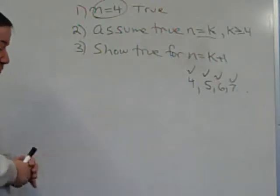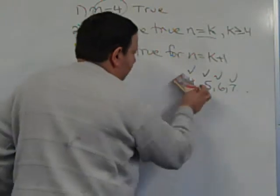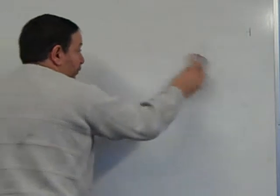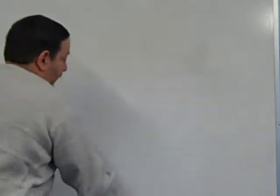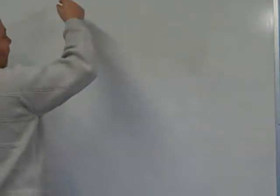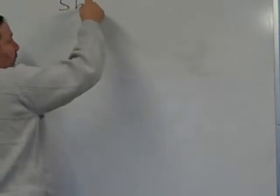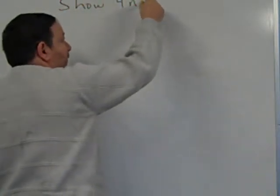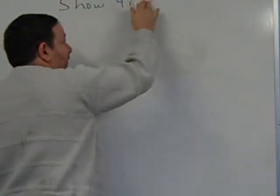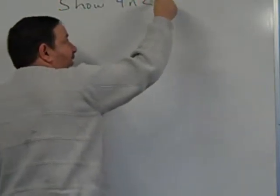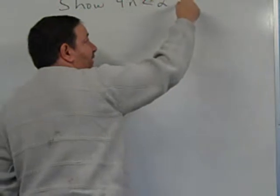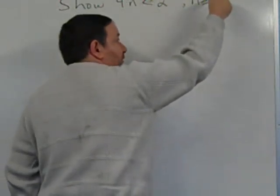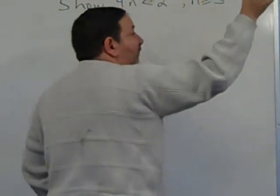This is the method to do a proof by induction. So let's actually do one. Suppose we want to show or prove the following: we want to show that 4 times n is less than 2 to the n, where n is an integer, but only from 5 and above.